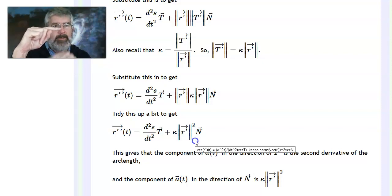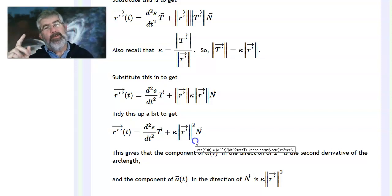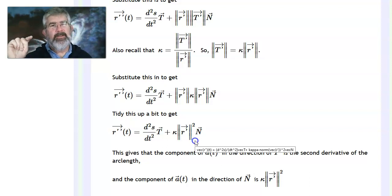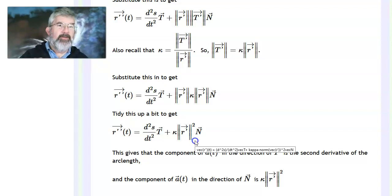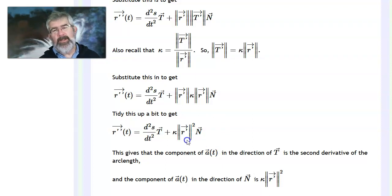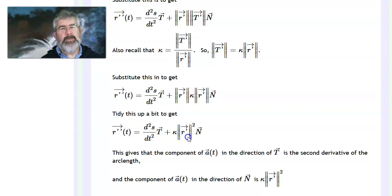On the other hand, the component of the acceleration vector in the normal direction — so if the tangent vector is going this way and the curve is moving that way, the normal vector is perpendicular to it — that's what's causing the curve to curve rather than going in a straight line. If the acceleration were entirely in the direction of the unit tangent vector, you'd just be moving along a straight line. It turns because some of the acceleration is perpendicular to the tangent, in the direction of the normal vector. And the magnitude of that component is the curvature times the speed squared.